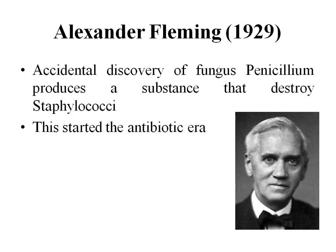Alexander Fleming discovered penicillin accidentally. He was working on staphylococci and left a plate of Staphylococcus aureus on a table before going on a short trip. When he returned after one week, he observed growth of a fungus, Penicillium, around which growth of the staphylococci had not occurred. He deduced that the Penicillium fungus secreted a substance that inhibited staphylococci — this was a milestone in the discovery of the first antibiotic ever in history. Penicillin was later purified and resynthesized, and it is still used today.